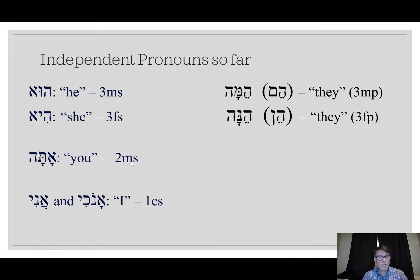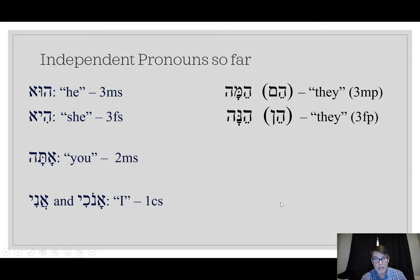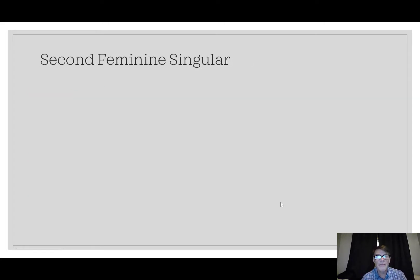We've also learned ani and anoki, which are the first common singular — used for both men and women — and it means I. So those are the independent pronouns we've had so far. In this video we're going to learn the rest of the yous, and then in the next video we'll learn what the first common plural is, how you say we.